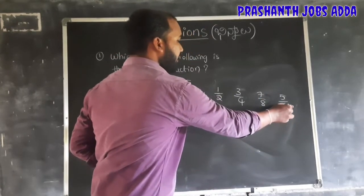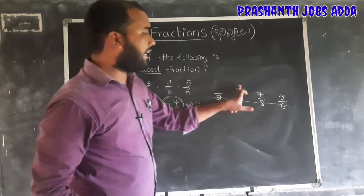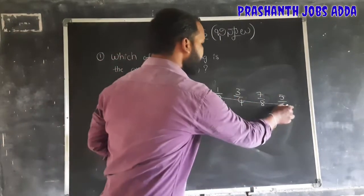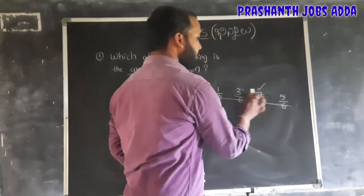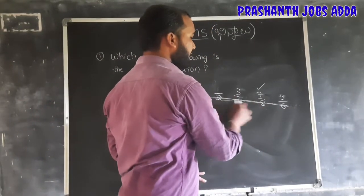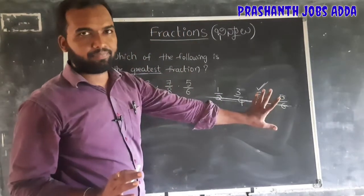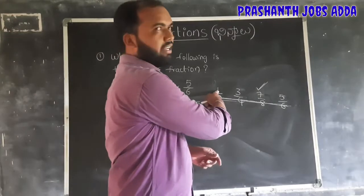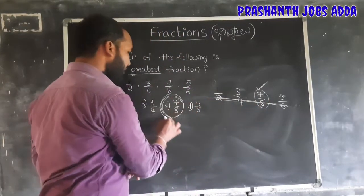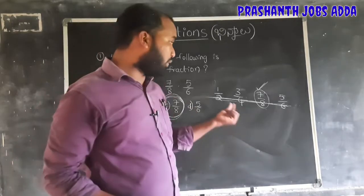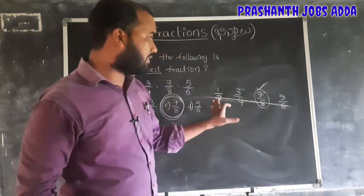If the difference between numerator and denominator is the same for all fractions, just look at the denominator. The biggest denominator gives the biggest fraction. So 7 by 8 has the largest denominator 8, making it the biggest fraction. The smallest fraction has denominator 2, which is 1 by 2.